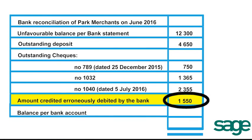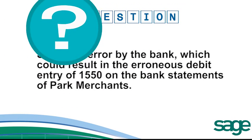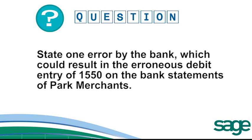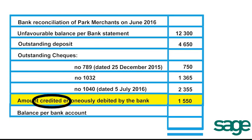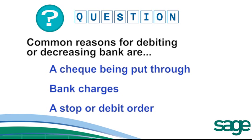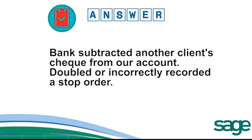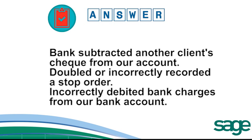On the bank reconciliation, we see that one entry is for an amount credited which was erroneously debited by the bank — the amount is R1,550. The question asks us to state one possible error by the bank which could have resulted in this erroneous debit on the bank statement of Park Merchants. The bank reconciliation states that the amount has been credited — that is, increased in our account as a result of a previous debit the bank made by mistake. The most common reasons include: the bank subtracted another client's cheque from our account, they doubled or incorrectly recorded a stop order, or debited incorrect bank charges from our account.